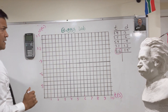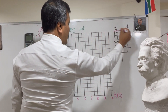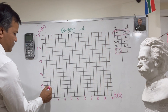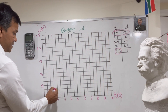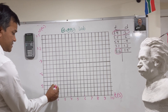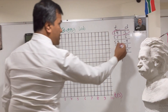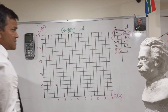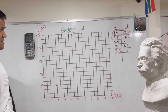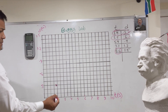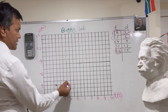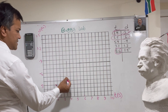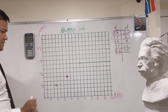Now let's draw the first point. At 1.9 seconds, the distance is 0.3 meters — right here. This is our first point. The second point: at 3.5 seconds, the car crosses 0.6 meters. 3.5 seconds is exactly right here.